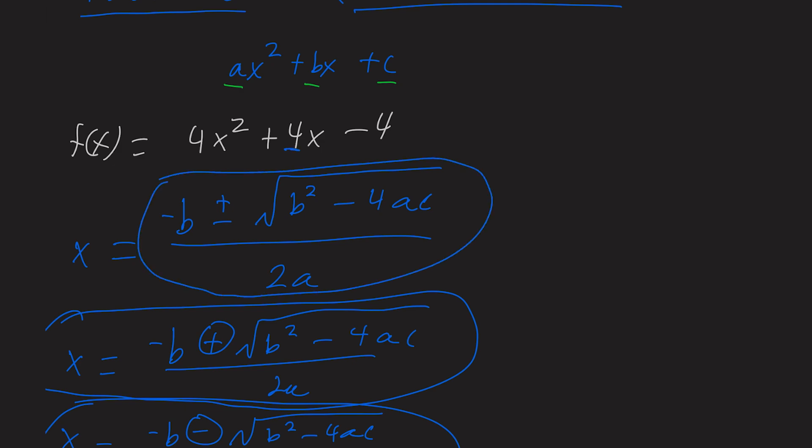So let's plug stuff into our equation now. b as referenced before is this term, a is this term, and c is this term. Negative b is going to be negative 4 plus or minus rad b squared is going to be 16 minus 4 times a, which is 4 times c, which is negative 4. And that's going to be all over 2 times a, which is 8.